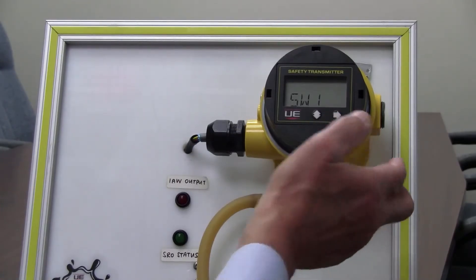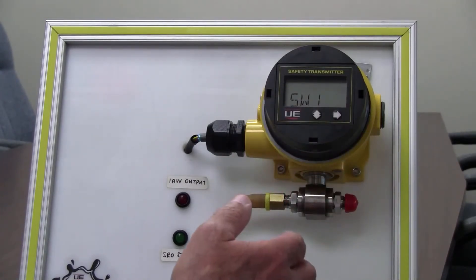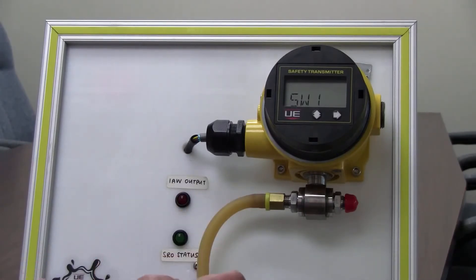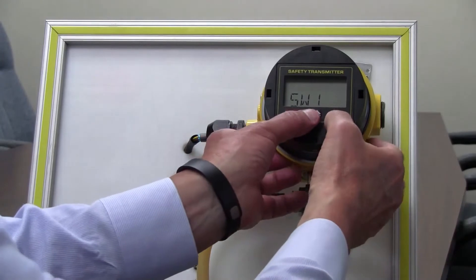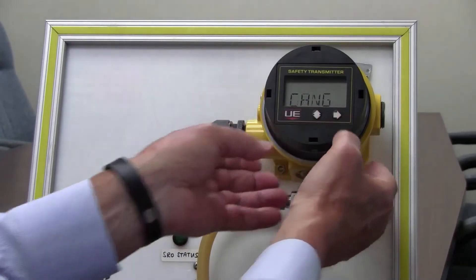At this point, if that's all I wanted to do was set the set point in the dead band and then save my settings, that would be two buttons to get to the save change menu. The default as you will see is no.